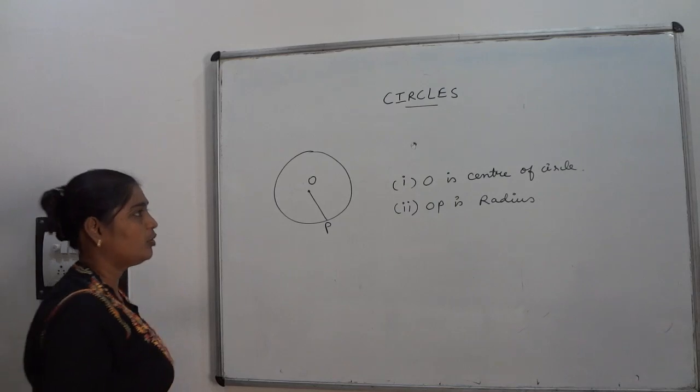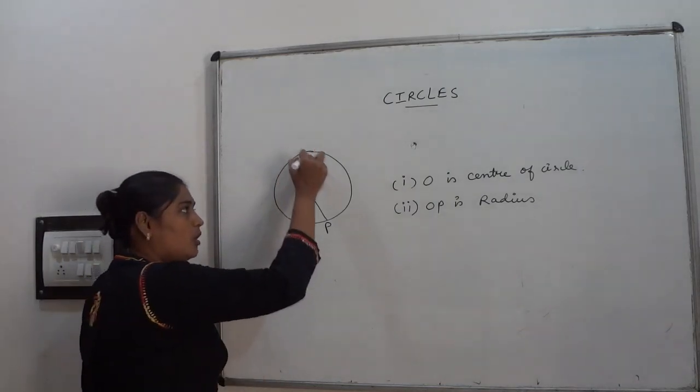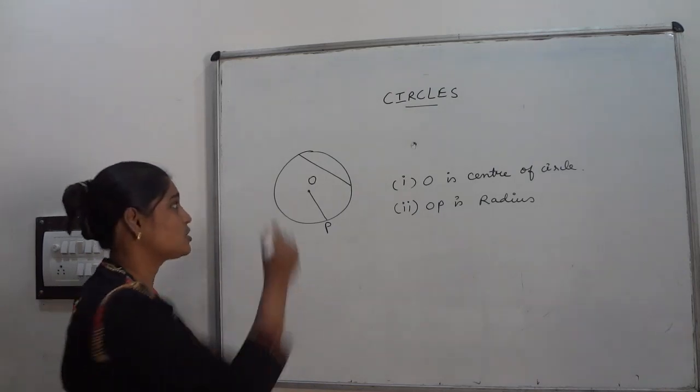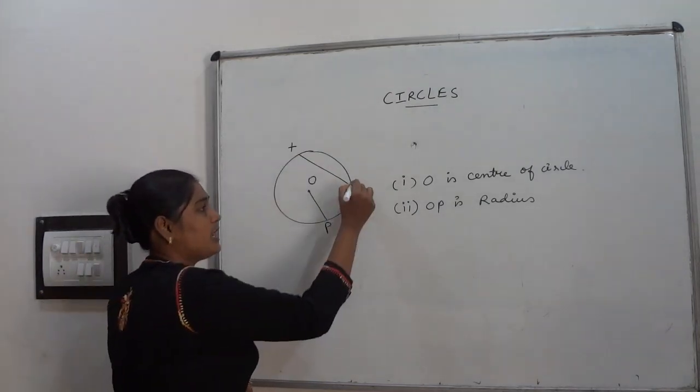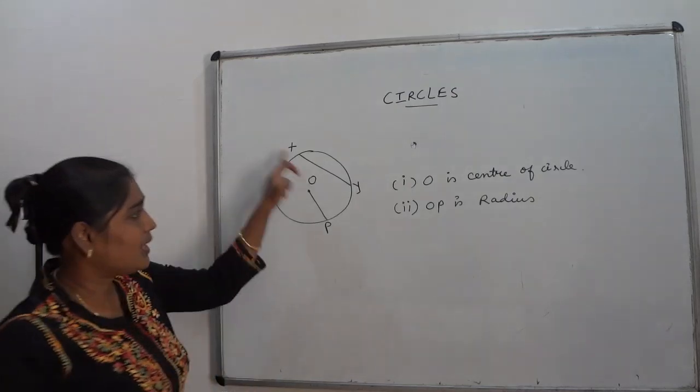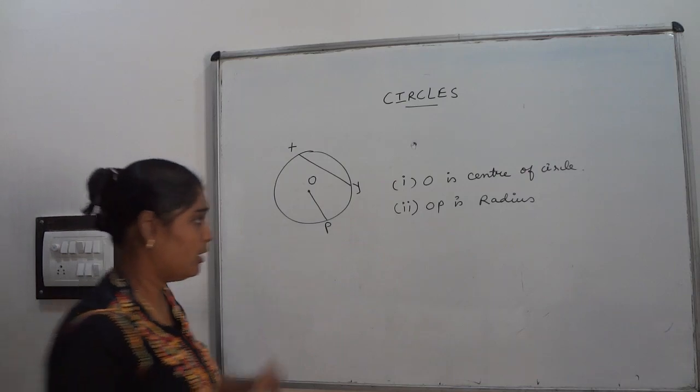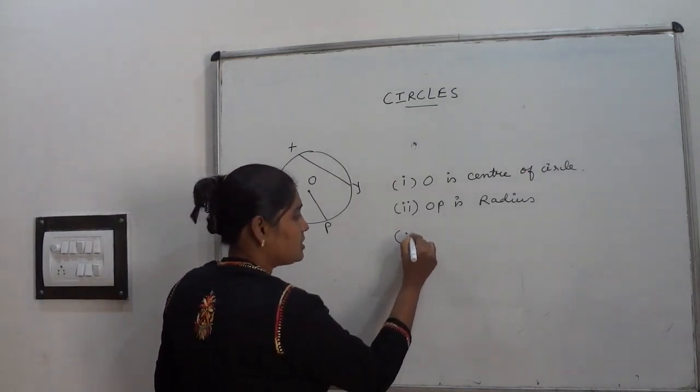And the third one I am going to talk about is the chord. Chord means a line which intersects the circle at two points is called chord. Suppose x, y and mark. See x, y is a line which intersects the circle at two points that is x and y. So x, y is called chord of the circle.